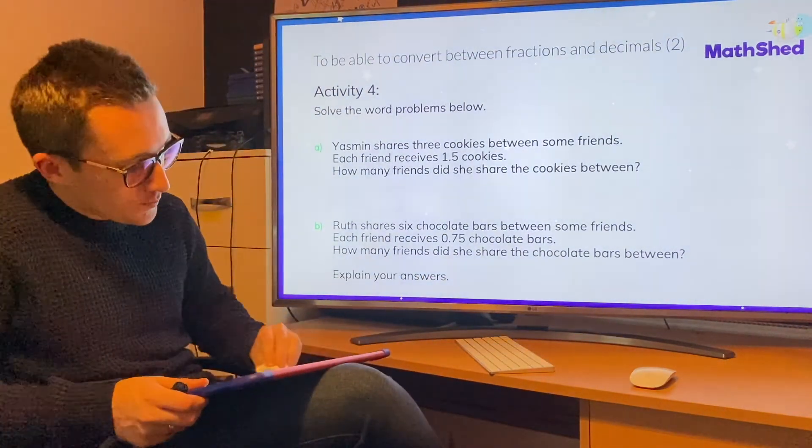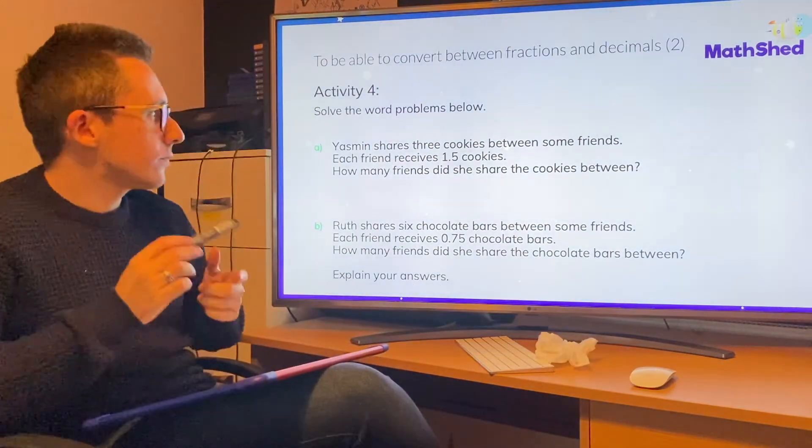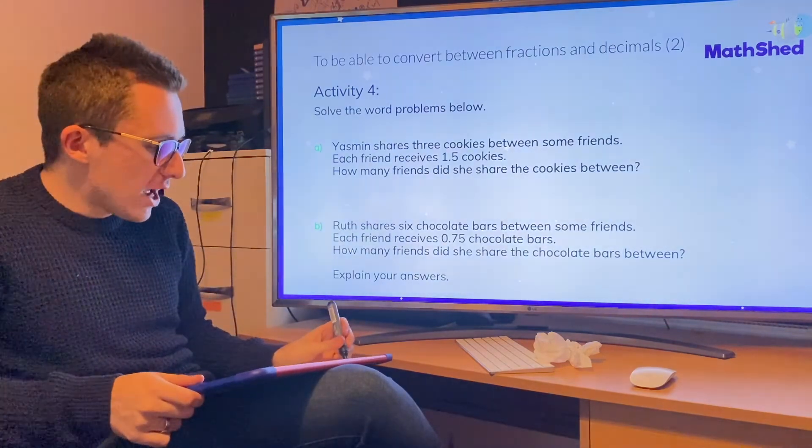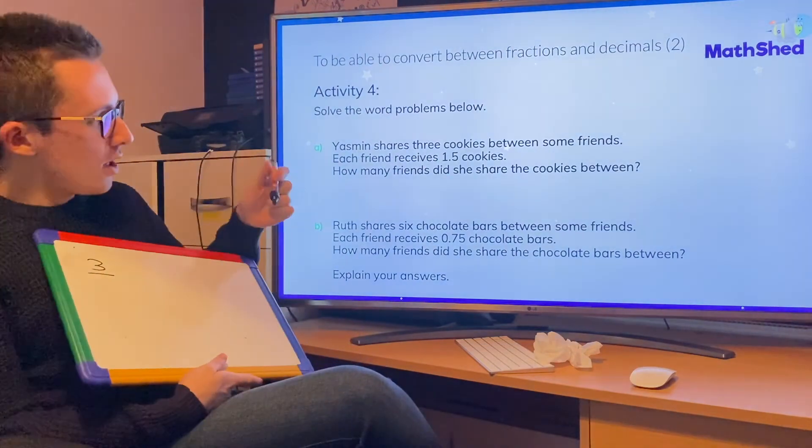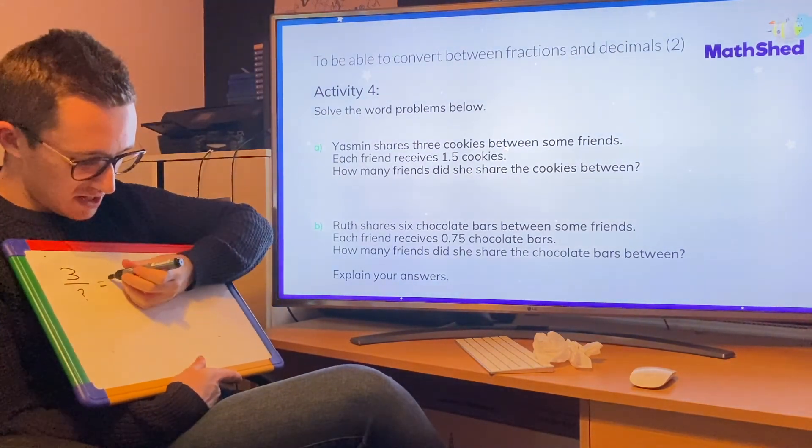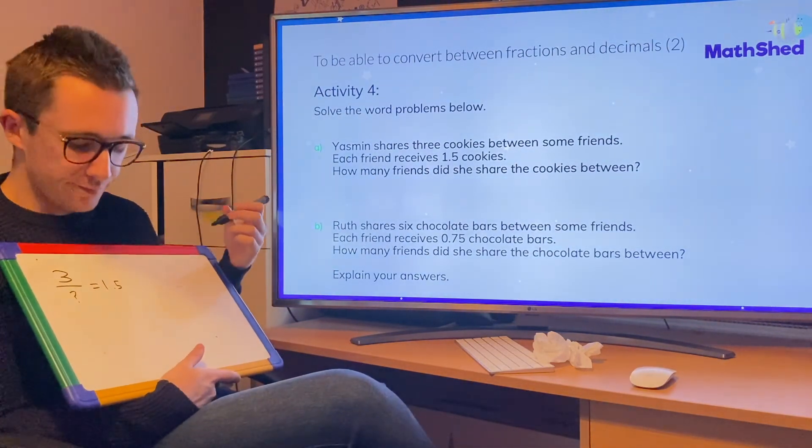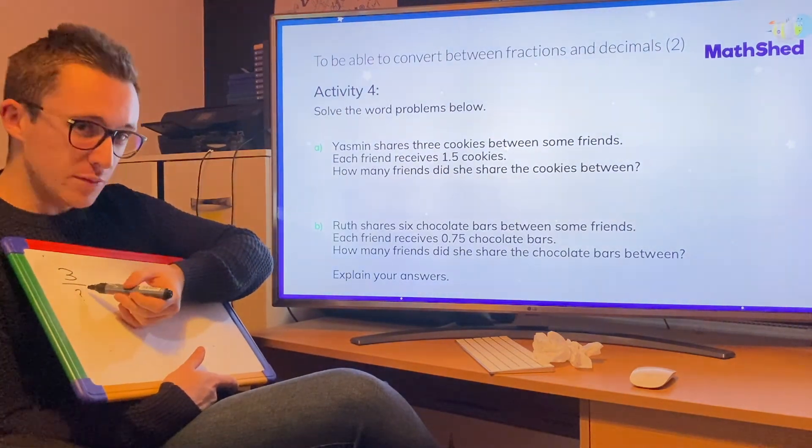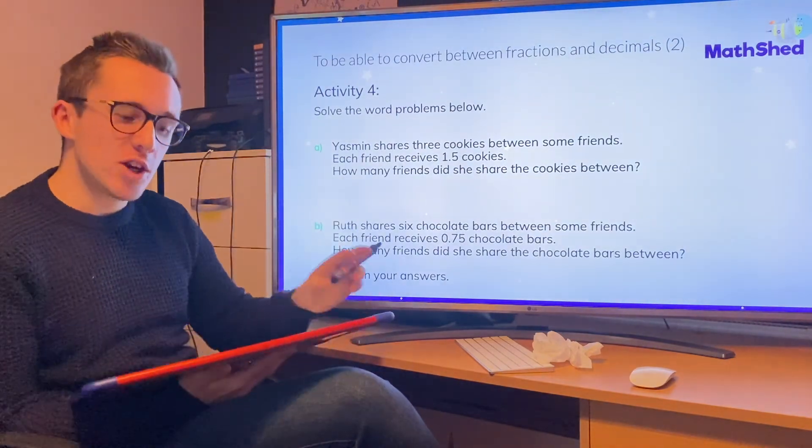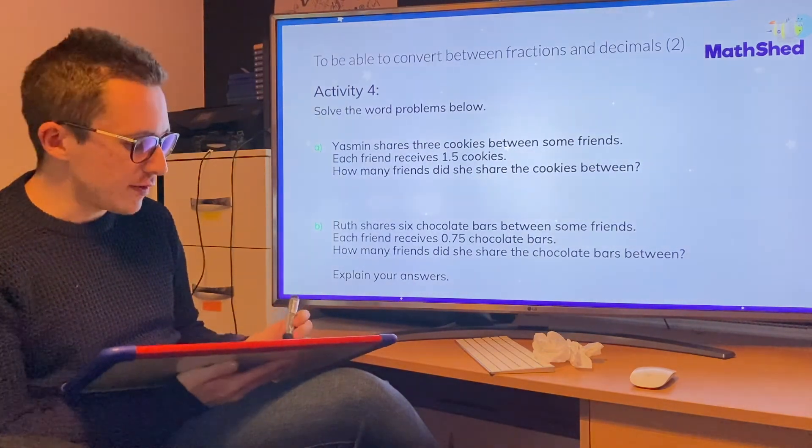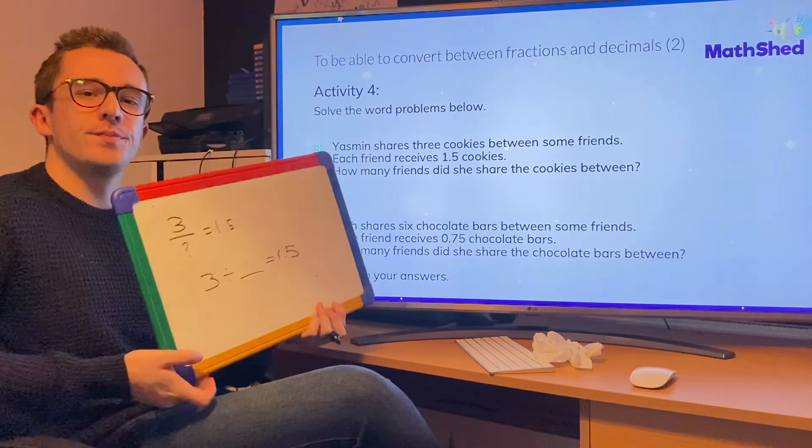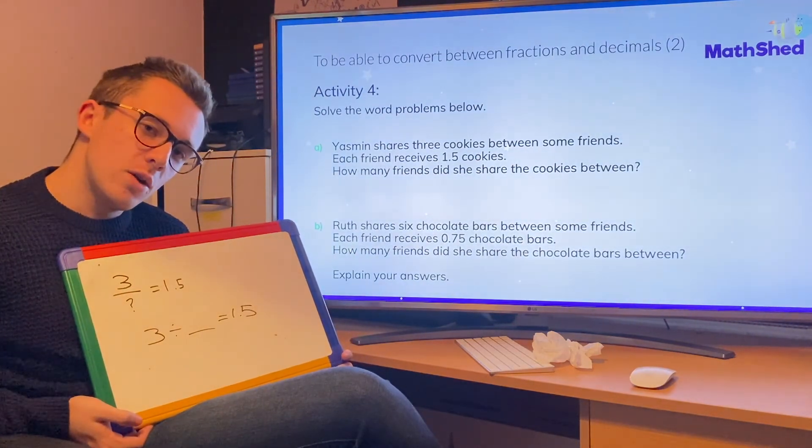Activity four is aimed at my group. I'm just going to show you how this works. So the first question here is, it says that Yasmin shares three cookies between some friends. So we've got our numerator, which is three. But we don't know how many friends she's got. Question mark. Each friend gets one and a half cookies, 1.5 cookies. Three divided by something, or three shared by something, gets me 1.5. Our job is to work out the something. Now, those of you in my group, this is what we call a missing part problem, which we do in our tough 10 quite a lot. So let me write it a different way and see if you can solve it. Three divided by something equals 1.5. See if you can work out the answer.